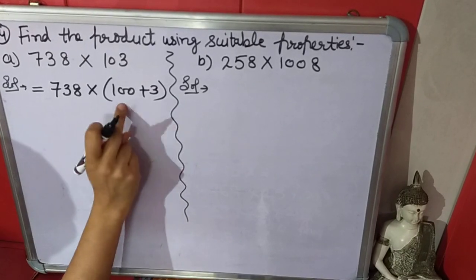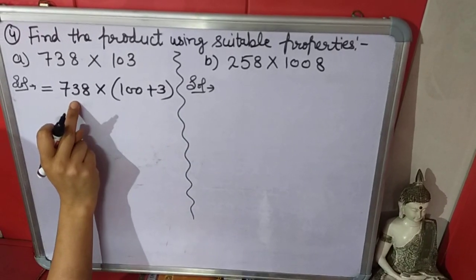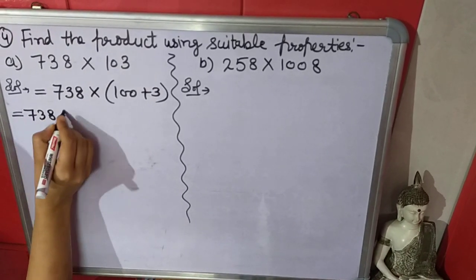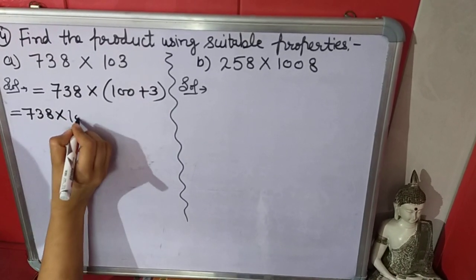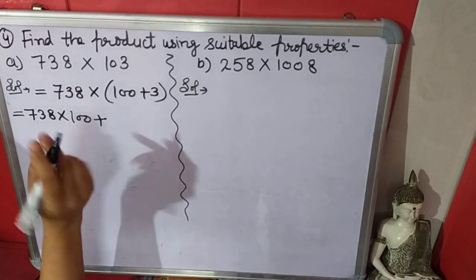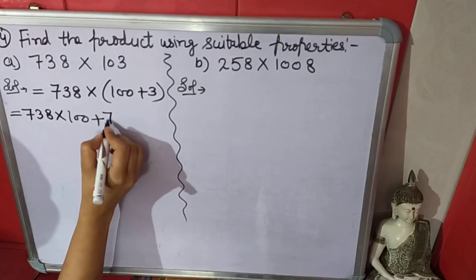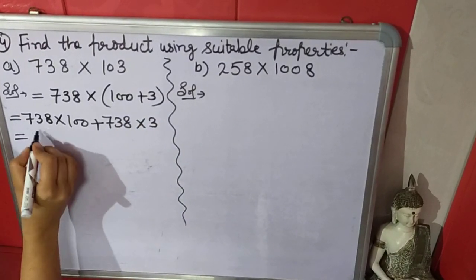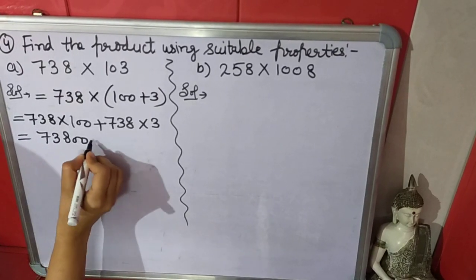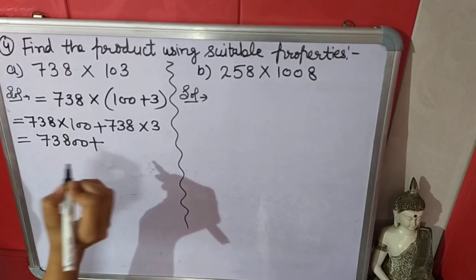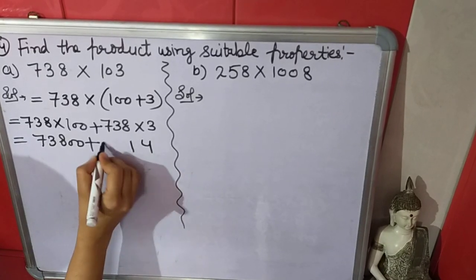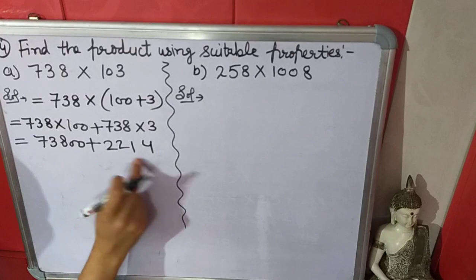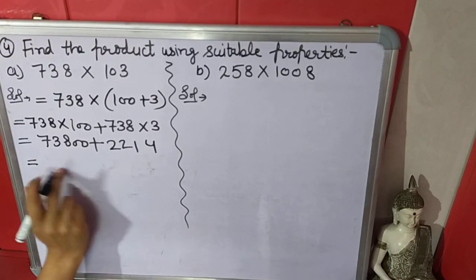In this property we have to multiply this number by 100 and by 3. When we will open this bracket, both numbers will be multiplied by 738. So it will be 738 multiplied by 100, and this sign will come here, then 738 again multiply by 3. It will be 73800 plus 2214. Now we will add this.